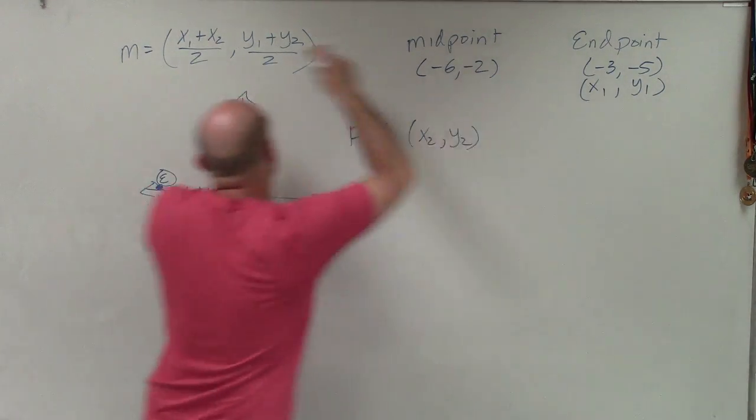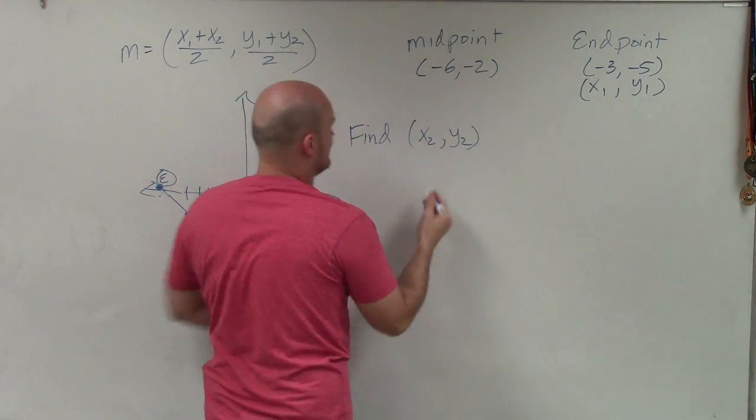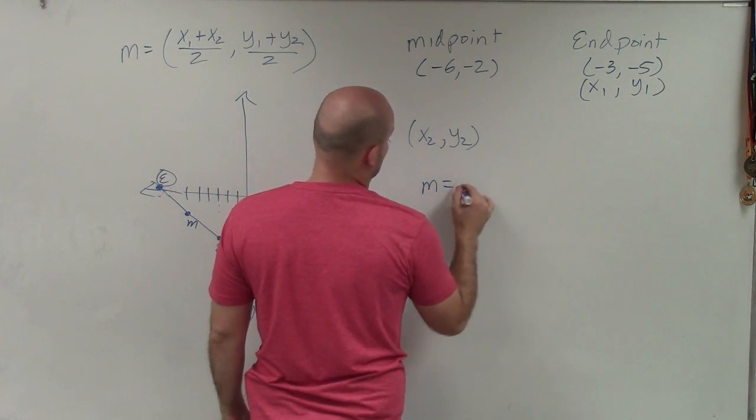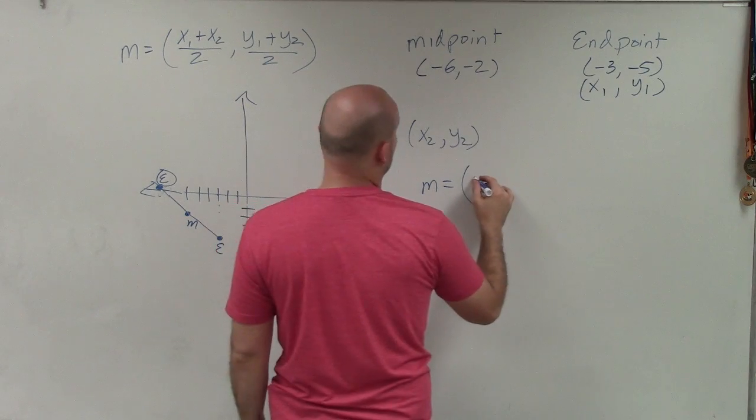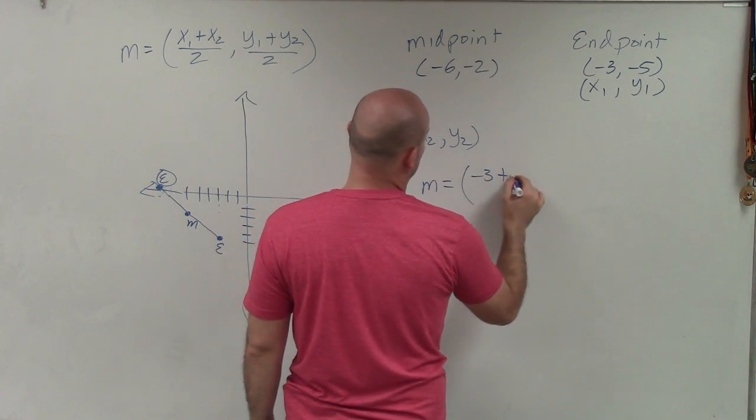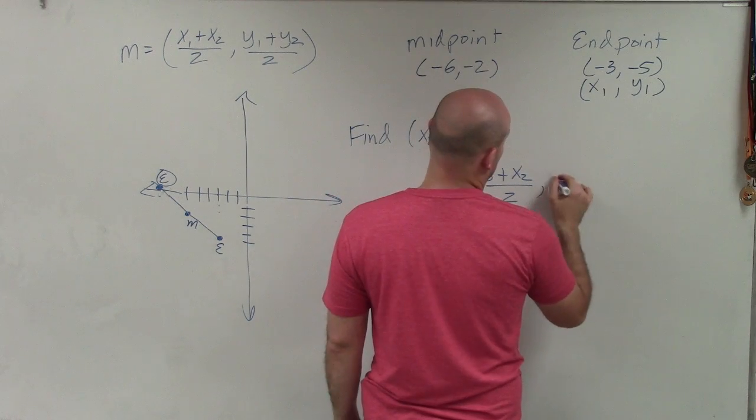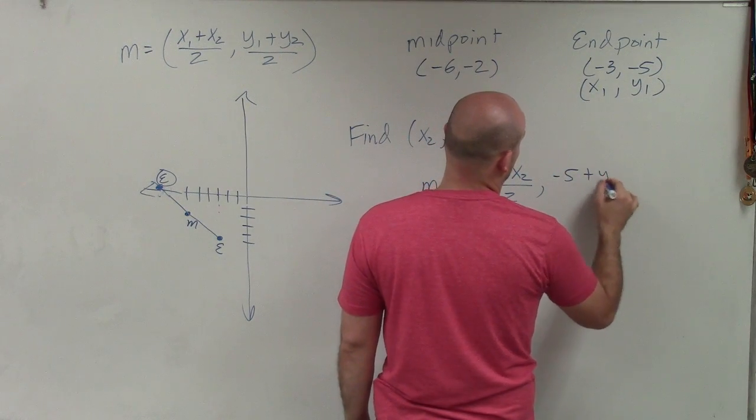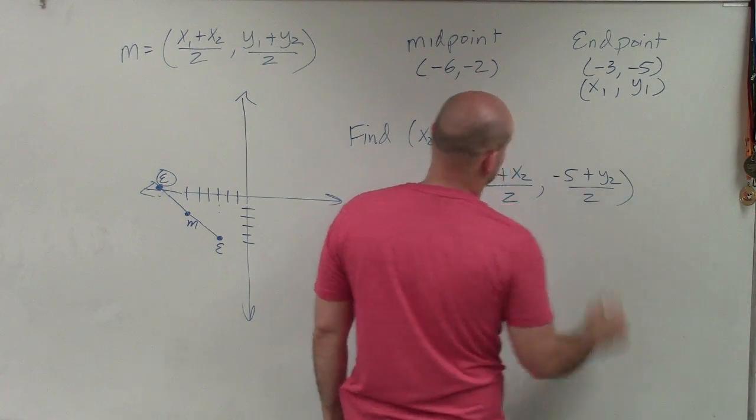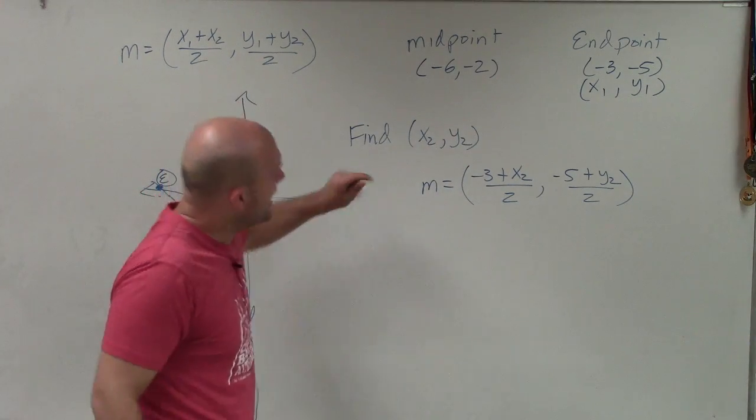So since we know this and we have a formula, let's plug it in. So the midpoint equals x1, which is -3 plus x2 divided by 2, comma y1, which is -5 plus y2 divided by 2. So that's what we know.